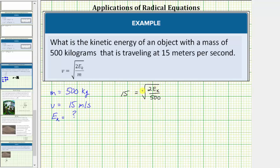Because the square root is already isolated on one side of the equation we will undo the square root by squaring both sides of the equation. On the left side 15 squared equals 225. On the right side squaring undoes the square root and we're left with two times E sub k divided by 500.